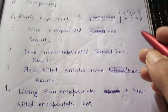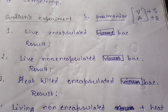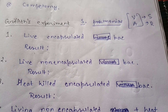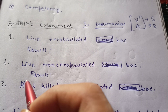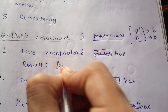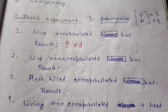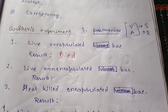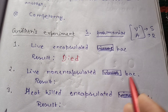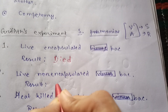There are four steps in Griffith's experiment. In the first step, live encapsulated bacteria were injected into the mouse — the mouse died, which is very expected. In the second step, live non-encapsulated bacteria were injected into the mouse. Since it is the avirulent strain, the mouse remained alive — also expected.